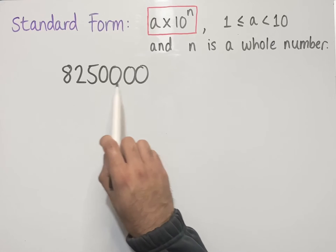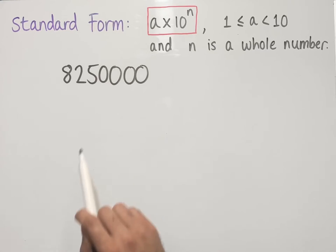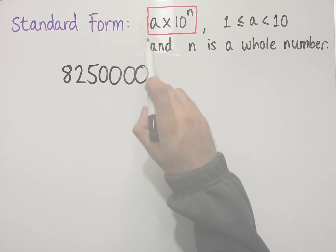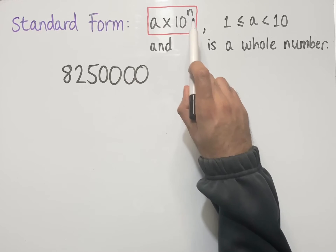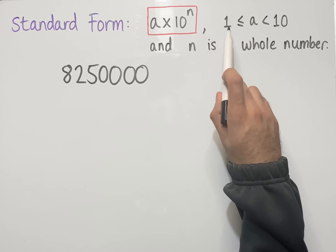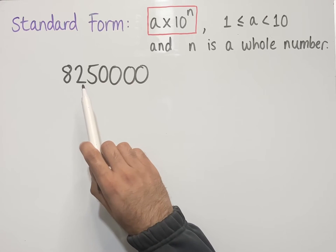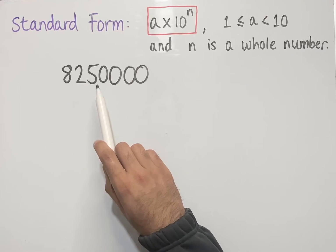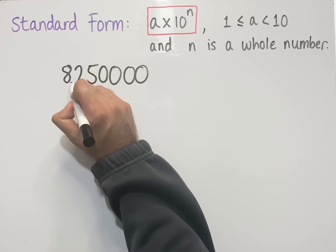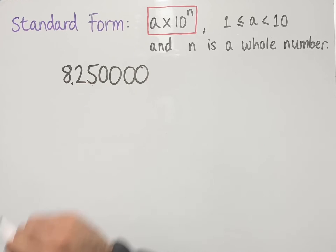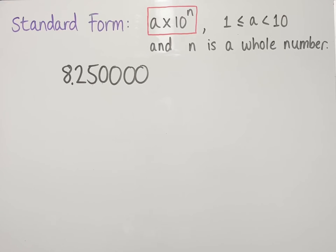Let's look at how to go from an ordinary number to standard form, using the same number from the previous example. Remember, a number is written in standard form if it is in the form a times 10 to the power of n, where a is greater than or equal to 1 and less than 10. So we place a decimal point between two digits so that we end up with a number between 1 and 10. If we place the decimal point between the digits 8 and 2, this number reads as 8.25, which is between 1 and 10.